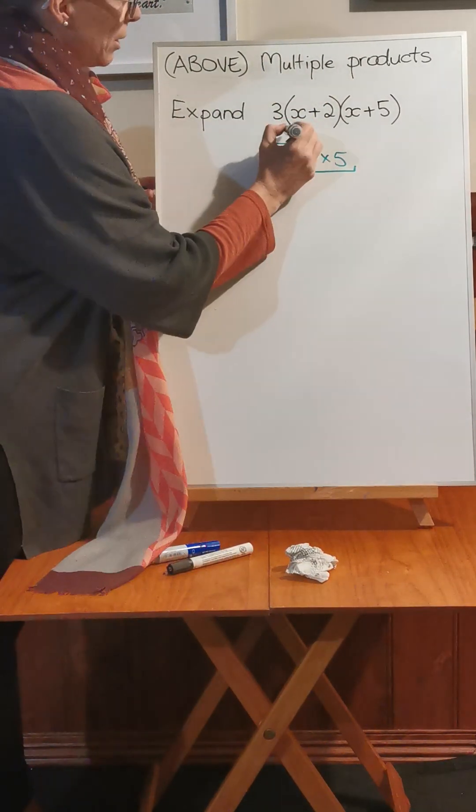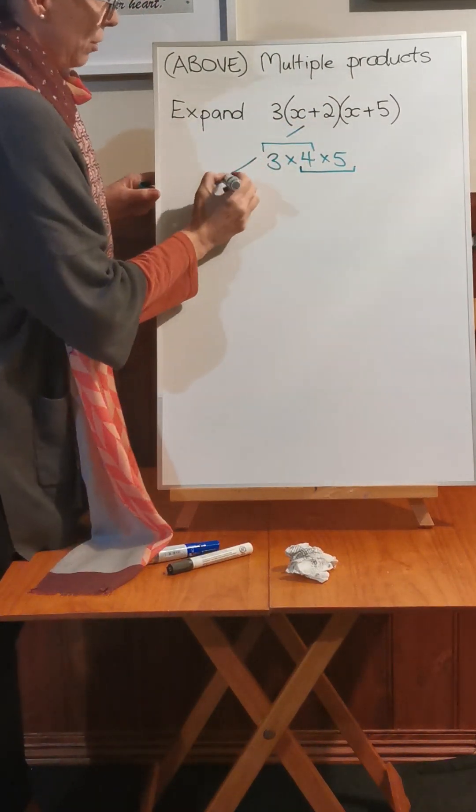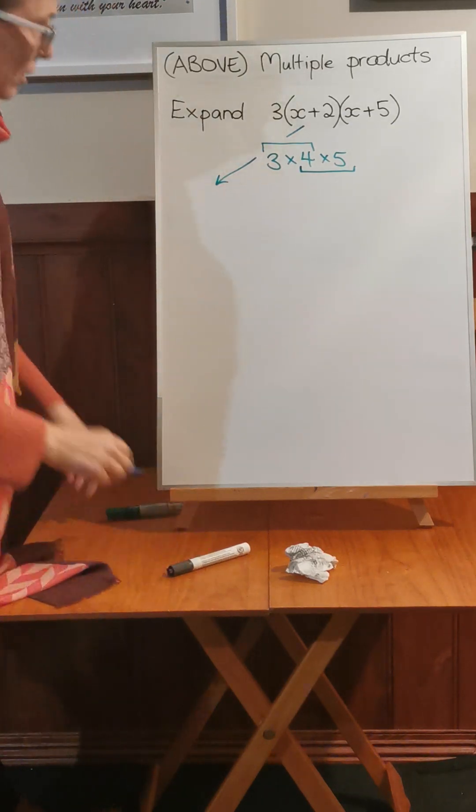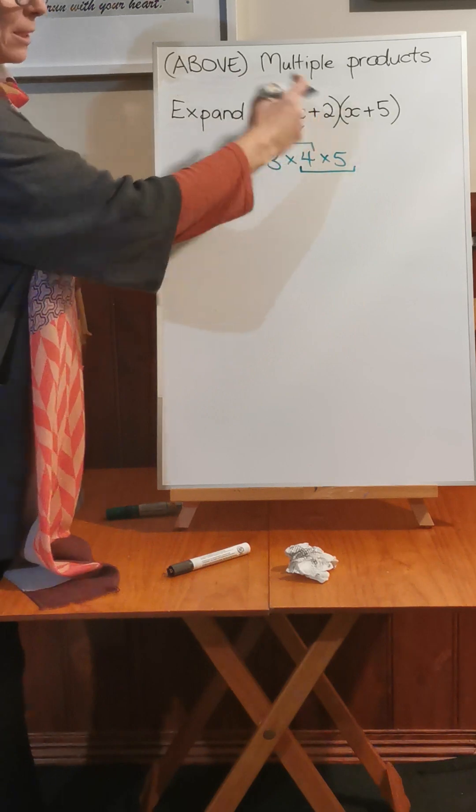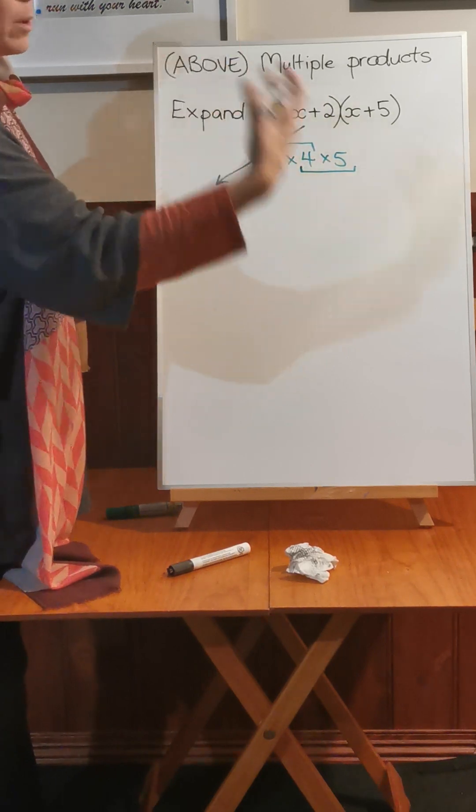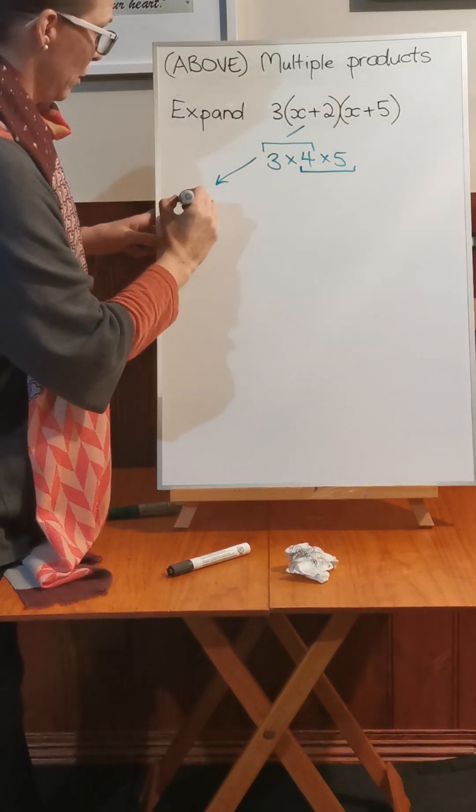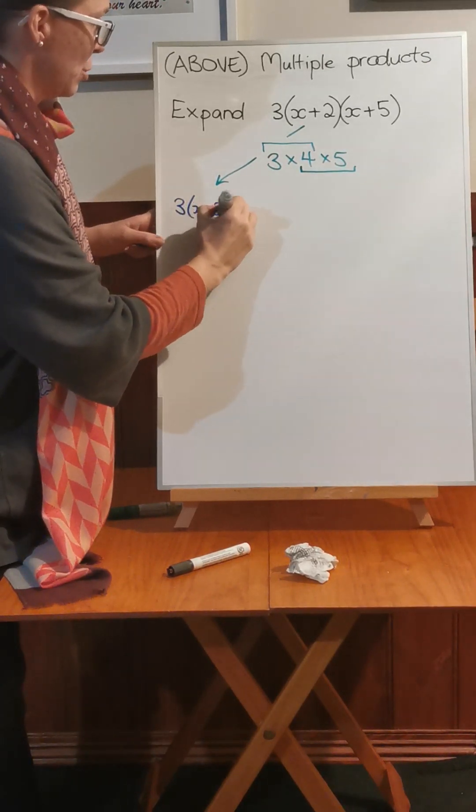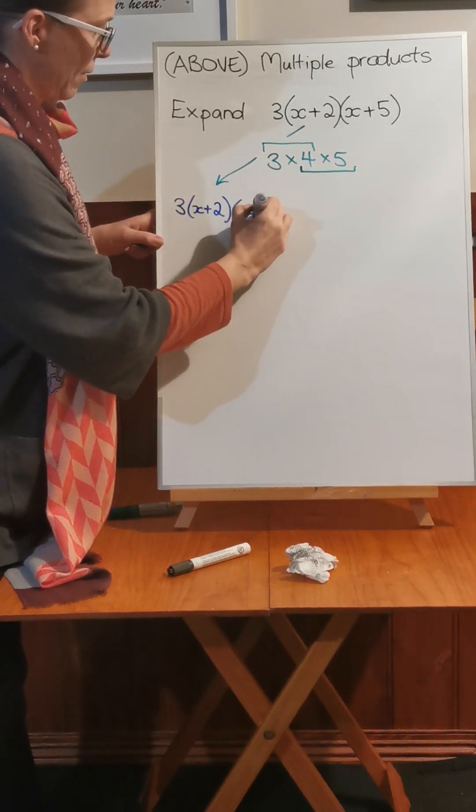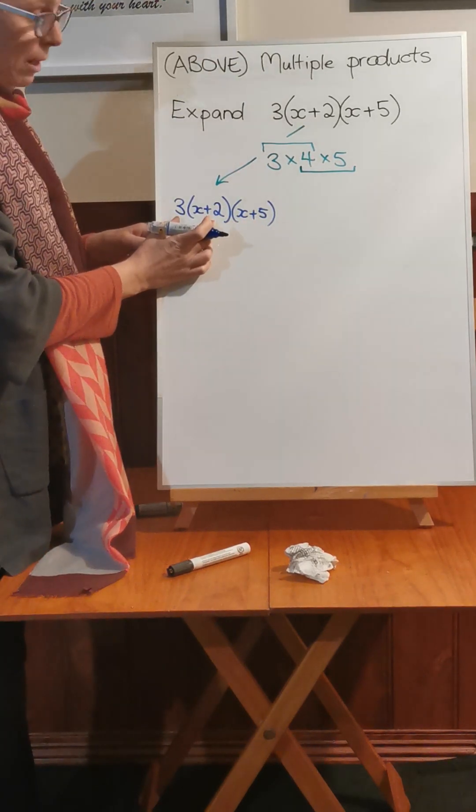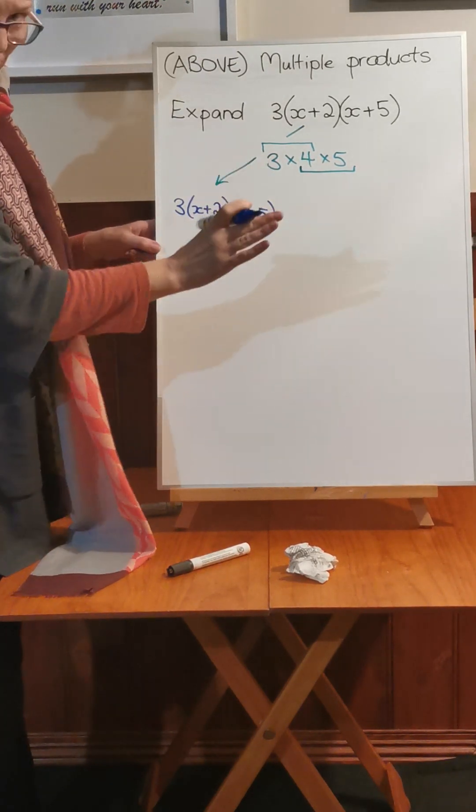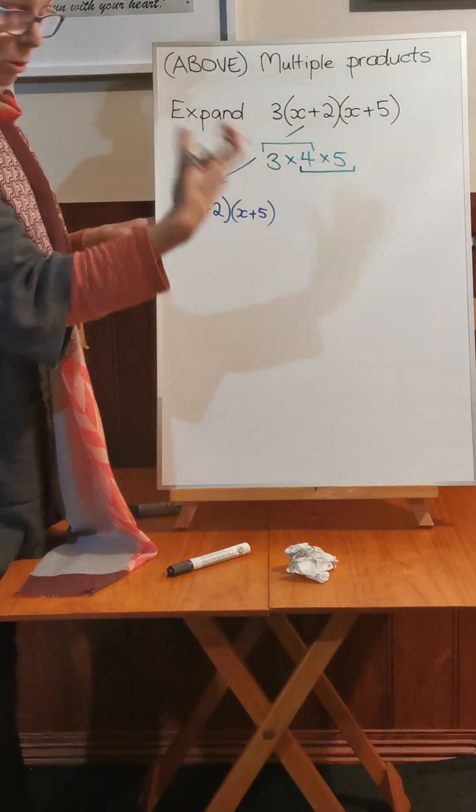So the first way I'm going to stick an arrow this direction is we're going to look at multiplying the first two pieces of information before we worry about the third. So 3x plus 2 times x plus 5. For now let's just multiply these together and not worry about the x plus 5. We'll multiply that later.